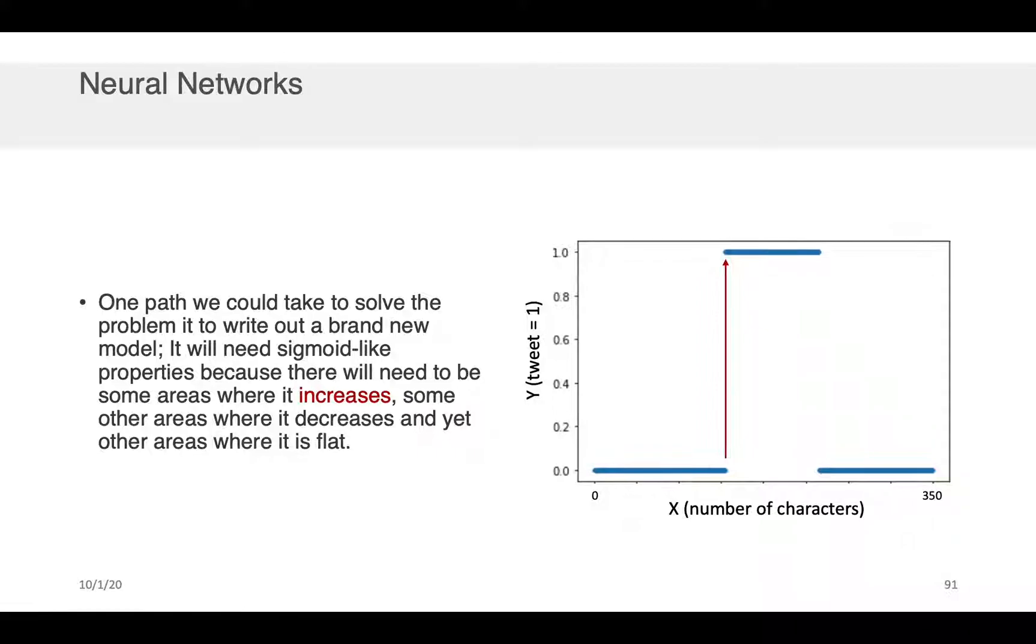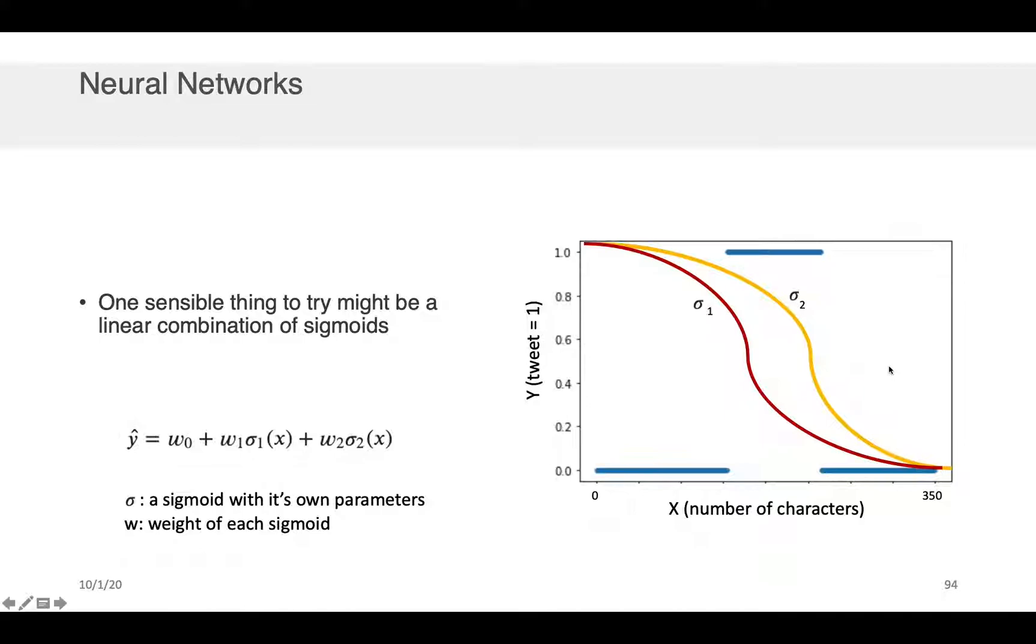Now, if we wanted to solve this problem, there's a path we could take, which is to write out a brand new model. And you might at first say, well, how should I write out a brand new model? And the way that you go about doing that is by thinking about the properties that you would need in that model and then trying to take advantage of existing objects that you're familiar with that might have some of those properties. So, for example, we know that we're going to need a model that increases at some locations, as indicated by the red line here. We also know that the model will need to decrease in some locations. And then there's going to need to be some areas where it's flat. Well, those are all three sigmoid-like properties. So, maybe some combination of sigmoids, some linear combination of sigmoids, might help us solve this problem.